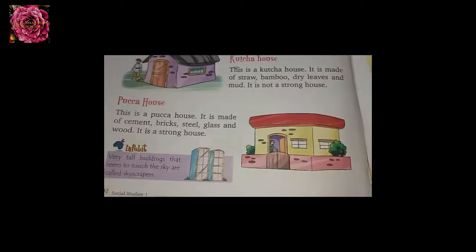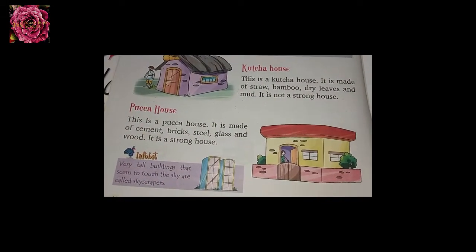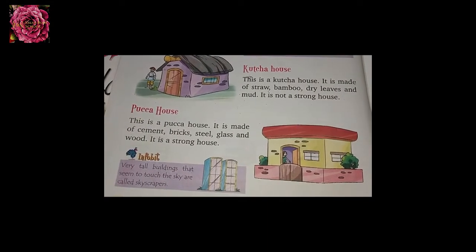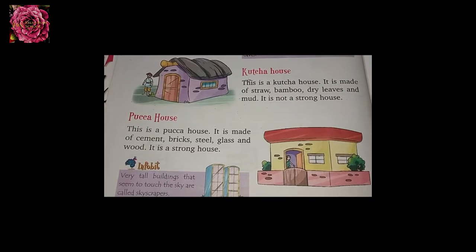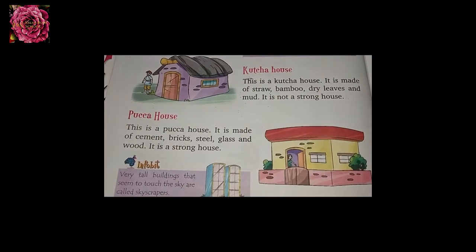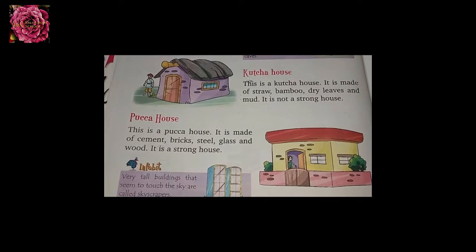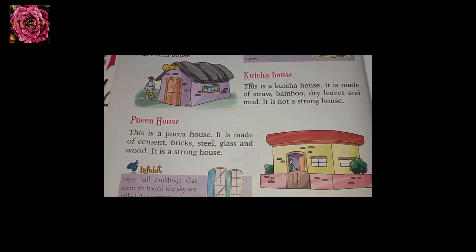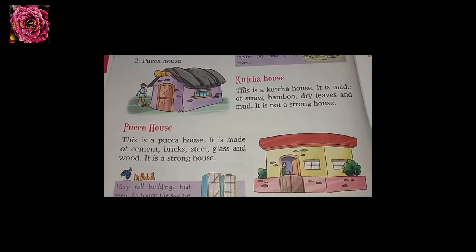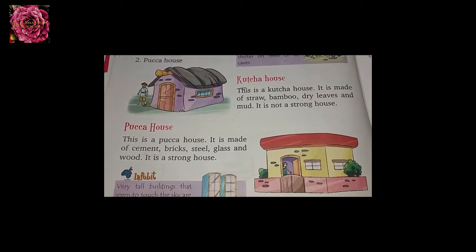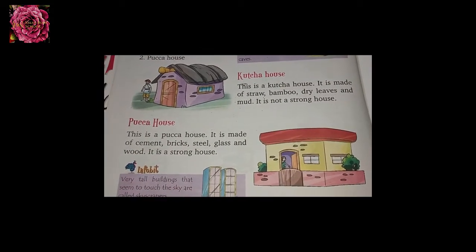This is a pukka house. It is made of cement, bricks, steel, glass, and wood. It is a strong house. You will see this type of house in cities.